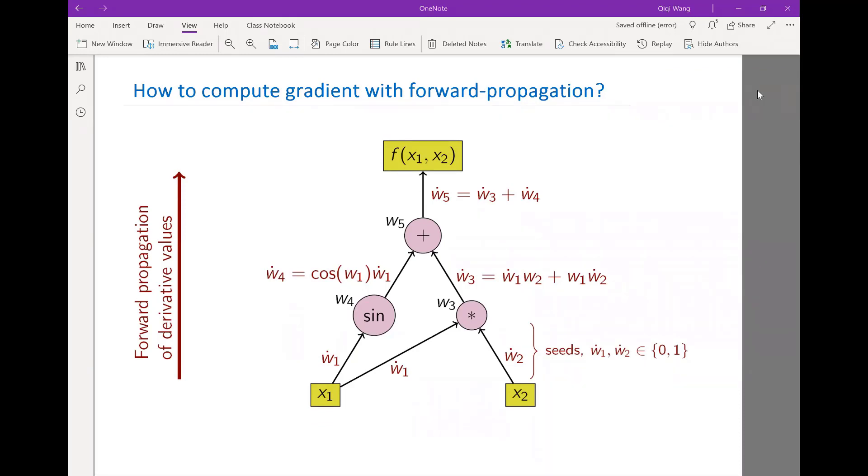Last lecture we discussed optimization and we figured out one of the key ingredients to solve an optimization problem is the gradient, the derivative of both the objective function and constraints with respect to the design parameters.